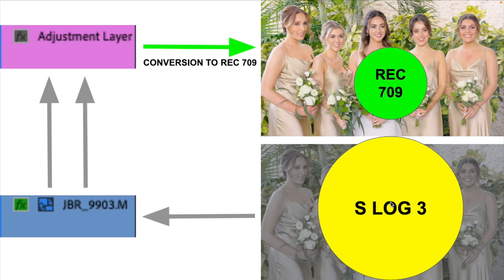But once it goes over to Rec 709, there's a lot less information to work with. Looking at these two circles — S-Log 3 and Rec 709 — the circle for S-Log 3 is a lot bigger. These represent what you call color spaces, and the S-Log 3 color space is a lot larger than the Rec 709 color space.